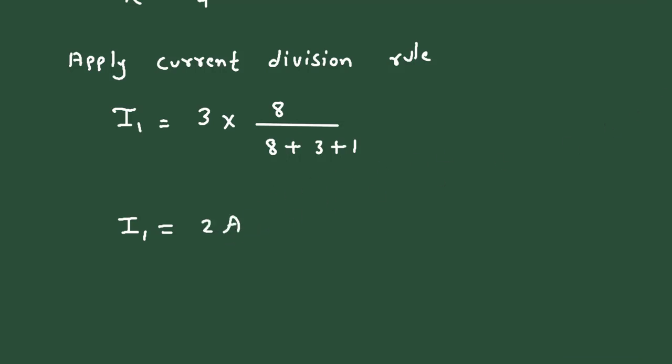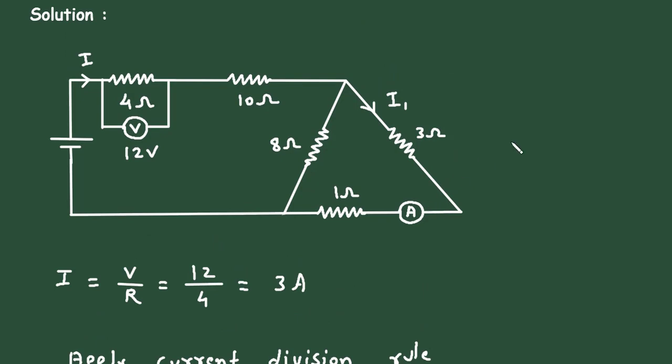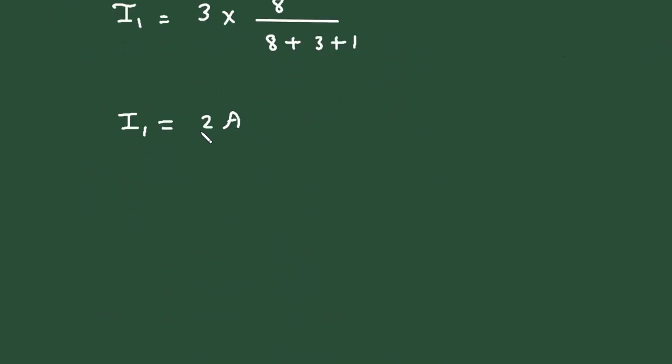So the current through this ammeter will be 2 ampere. So here we can write ammeter current is equal to 2 ampere. So this is how this is what we have to find in this question.